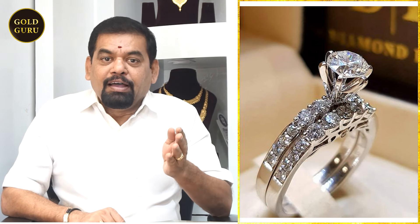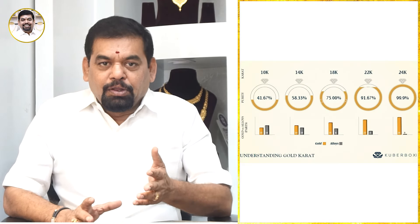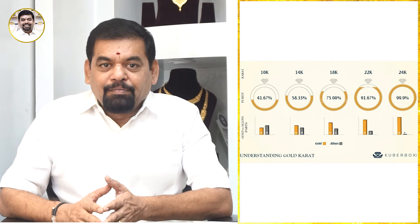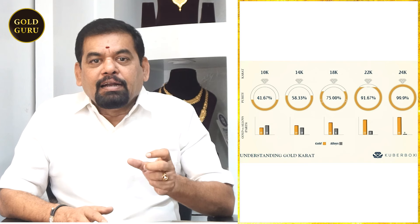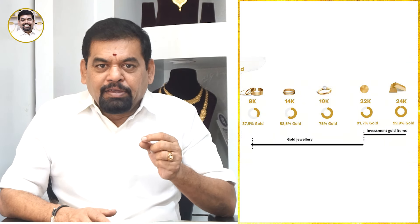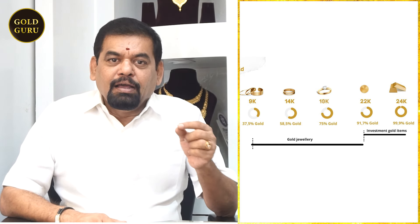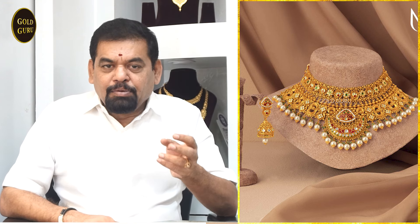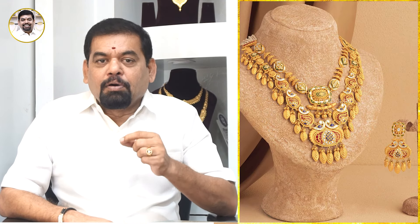You have a diamond measured in CT. Now, for gold, the number refers to purity. If you have 24 carat, one carat is 4.166 percent. 18 carat is 75% gold. 22 carat KT is 92 percent — that is 91.66 percent gold purity.